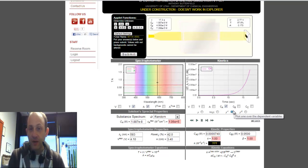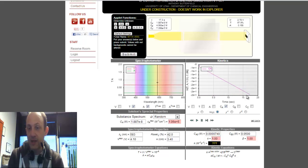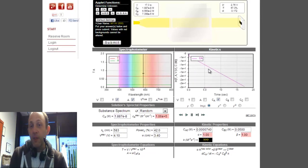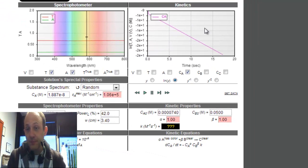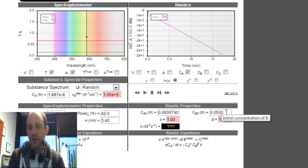So, I'm plotting 1 over the concentration of A, which is clearly not linear. We know that it's a first order reaction, so if I plot the log, it should be linear, and indeed it is. The slope of that line is going to equal the rate constant times the concentration of B raised to the first power.